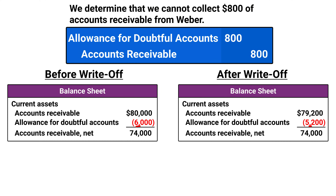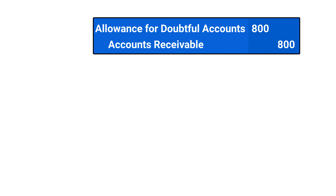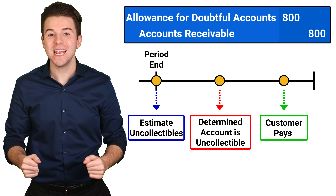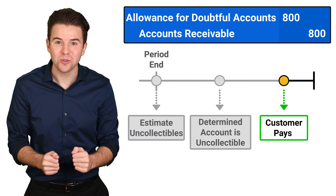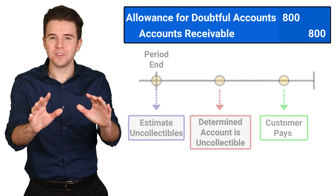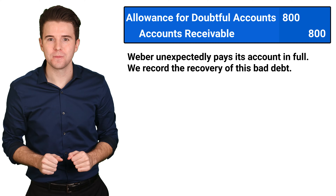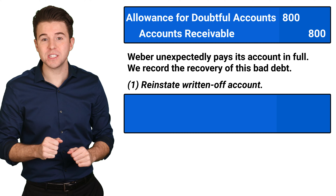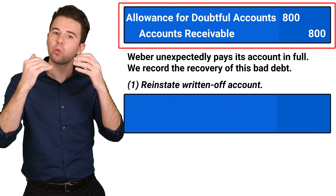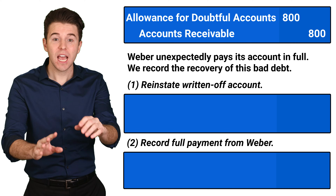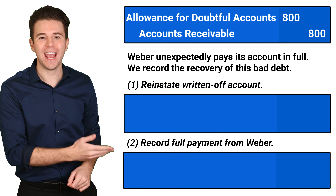This entry also does not affect the realizable value of accounts receivable. Now, assume a couple months later, the customer all of a sudden pays us the 800 that was due. To account for this, we need to record two entries: one to reverse the entry we just made and reinstate that customer's account, and a second to record cash received.